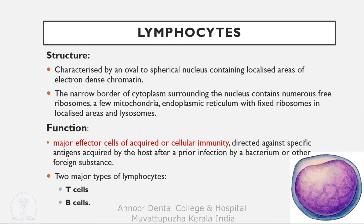Lymphocytes: structure characterized by an oval to spherical nucleus with localized areas of electron-transparent chromatin; the narrow border of cytoplasm surrounding the nucleus contains numerous free ribosomes, a few mitochondria, endoplasmic reticulum with fixed ribosomes in localized areas, and lysosomes. Function: major effector cells of acquired or cellular immunity, directed against a specific antigen acquired after prior infection. Lymphocytes are of two major types: T cells and B cells.